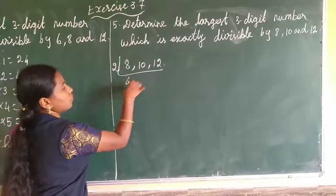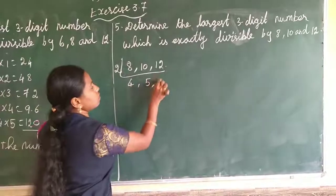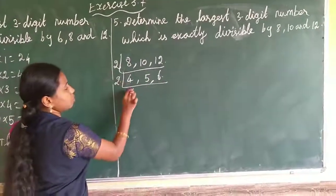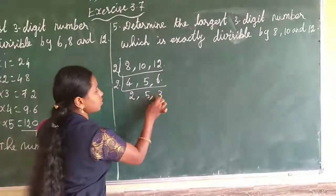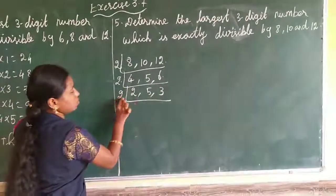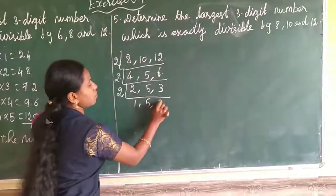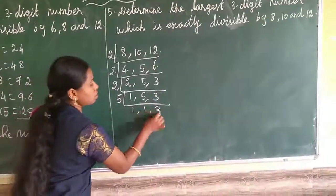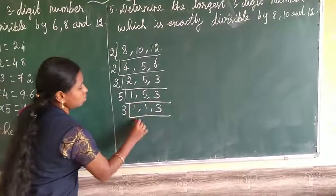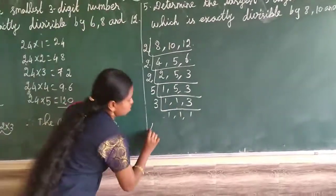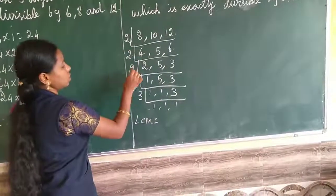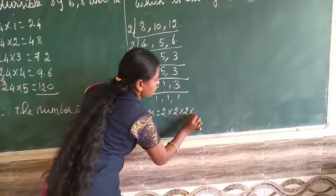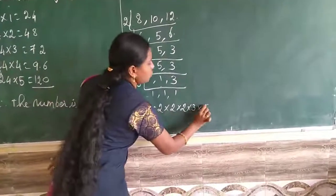I am going to work out 8, 10, 12. 2 table, 4, 5, 6. 2 table, 2, 5, 3. Again, 2 table, 1, 5, 3. 3 table, 1, 1, 1. 5 table, 1, 1, 1. So, LCM equal to 2, 2, 2, 3, 5.